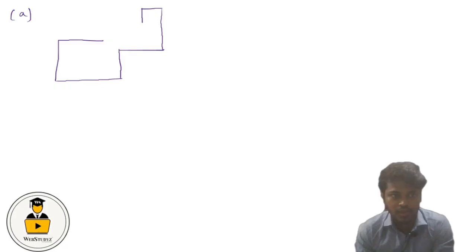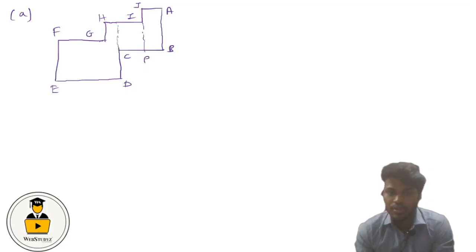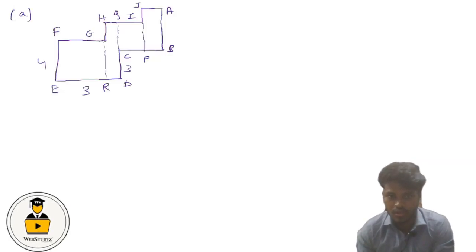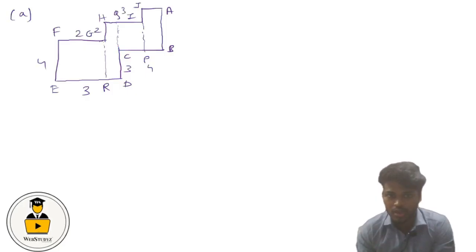Here is Figure 1. Let us name the vertices of this figure: A, B, C, D, E, F, G, H, I, J, then P, Q, and R. Now let us write the values: 4, 3, 3, 4, 4, 3, 3, 4, then 2, 2, 3, 1. So the labeled dimensions are 2, 2, 3, and 1.